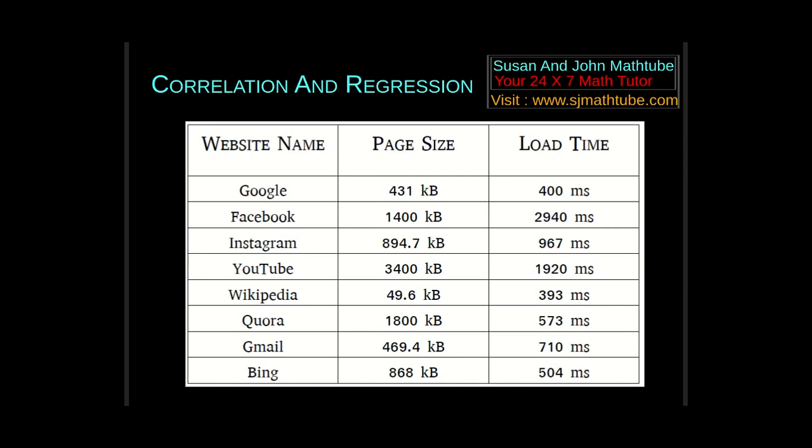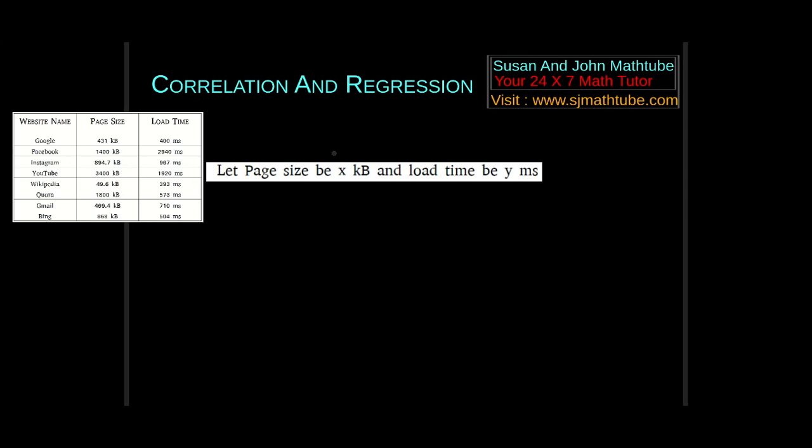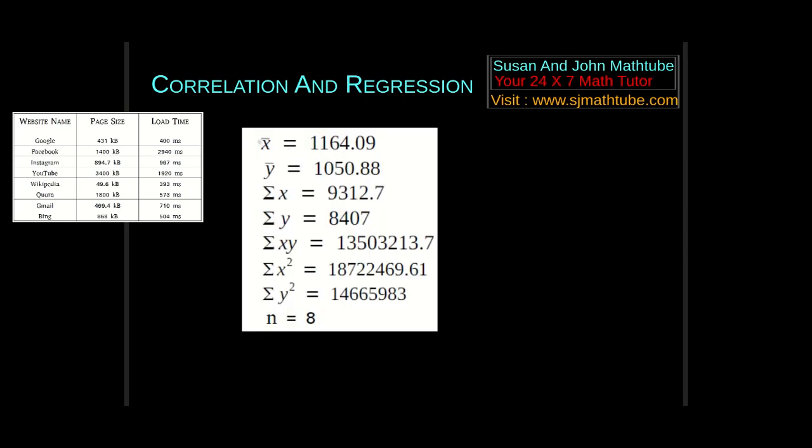Now let's do one problem and understand correlation and regression. I have data which connects page size and load time of some famous websites. I'm calling the page size x and load time y. Use a calculator and find x bar, y bar, sigma x, sigma y, all these things. If you're feeling lazy to use a calculator, calculate as you calculated long back. Find all these values.